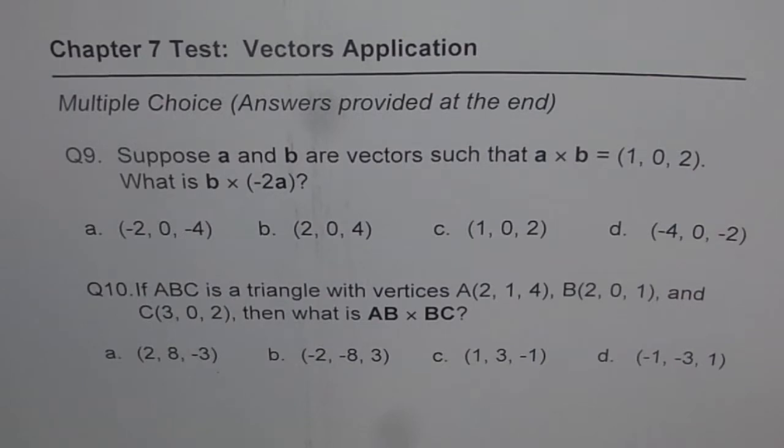Question 9: Suppose A and B are vectors such that A cross B equals (1, 0, 2). What is B cross minus 2A? You are given 4 choices.